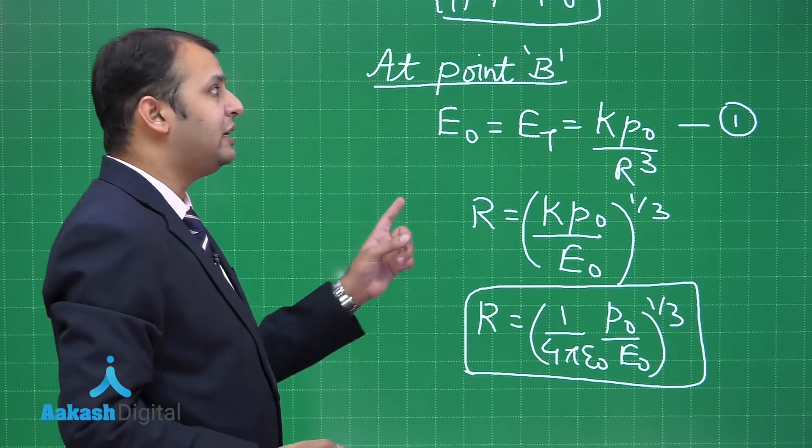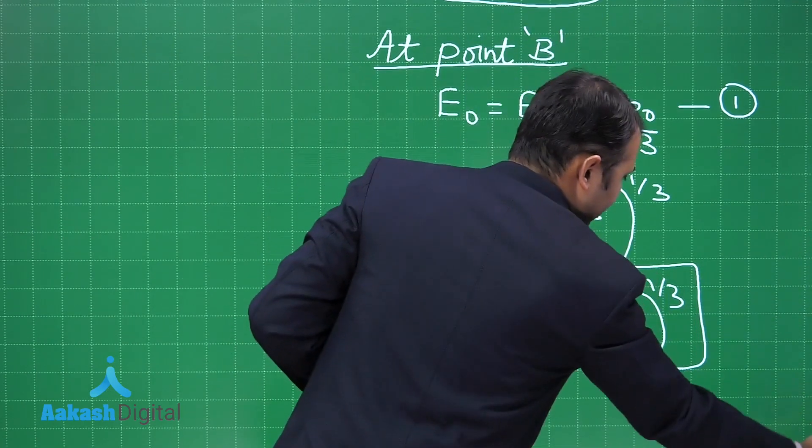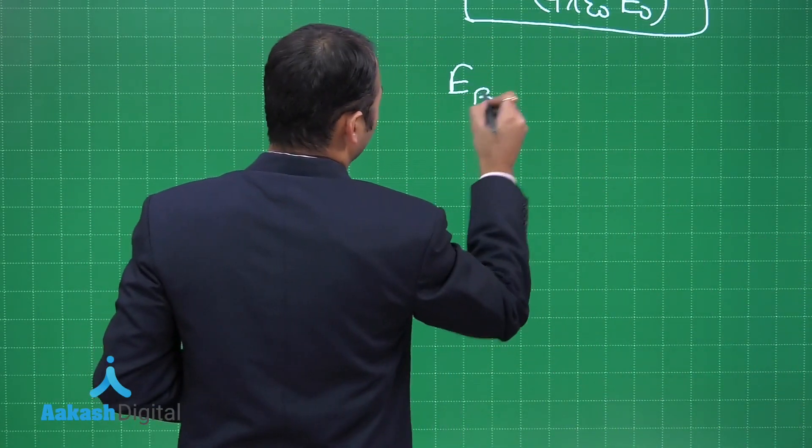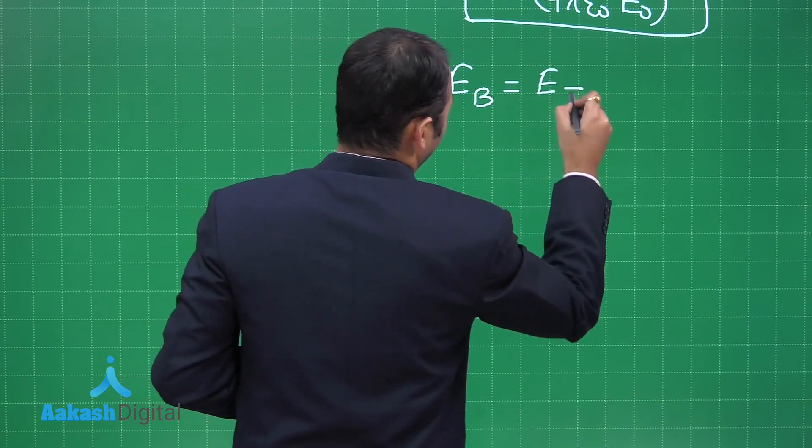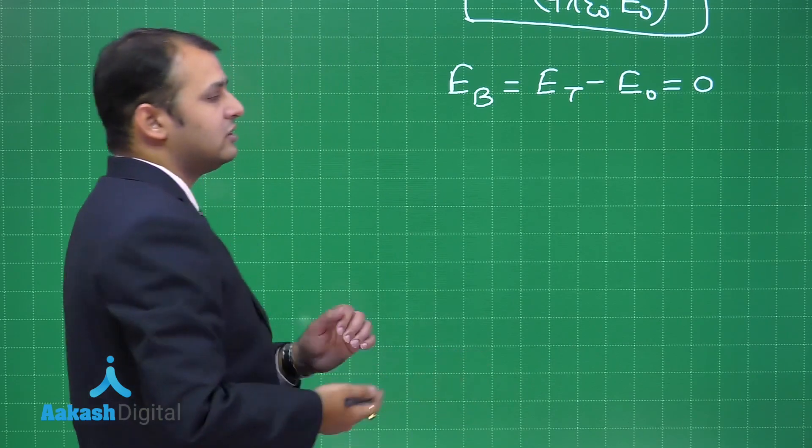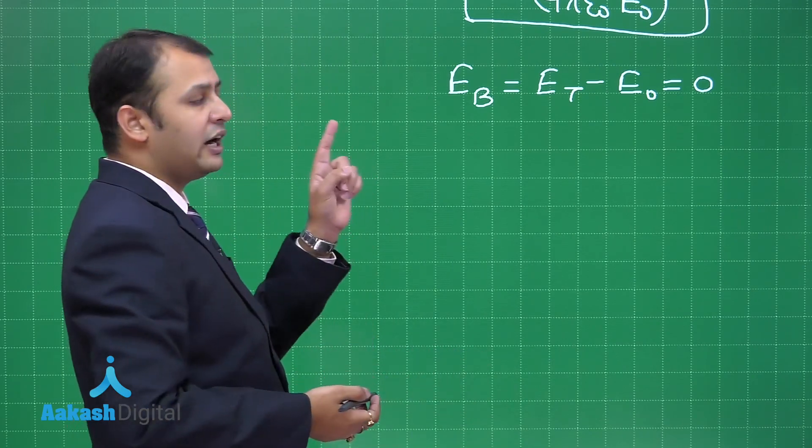What is the electric field at B then? So if you talk about the net electric field at B, it will be simply represented as E_B equals E_T minus E₀. And since they are equal, that means there should be 0. So electric field at B is 0.